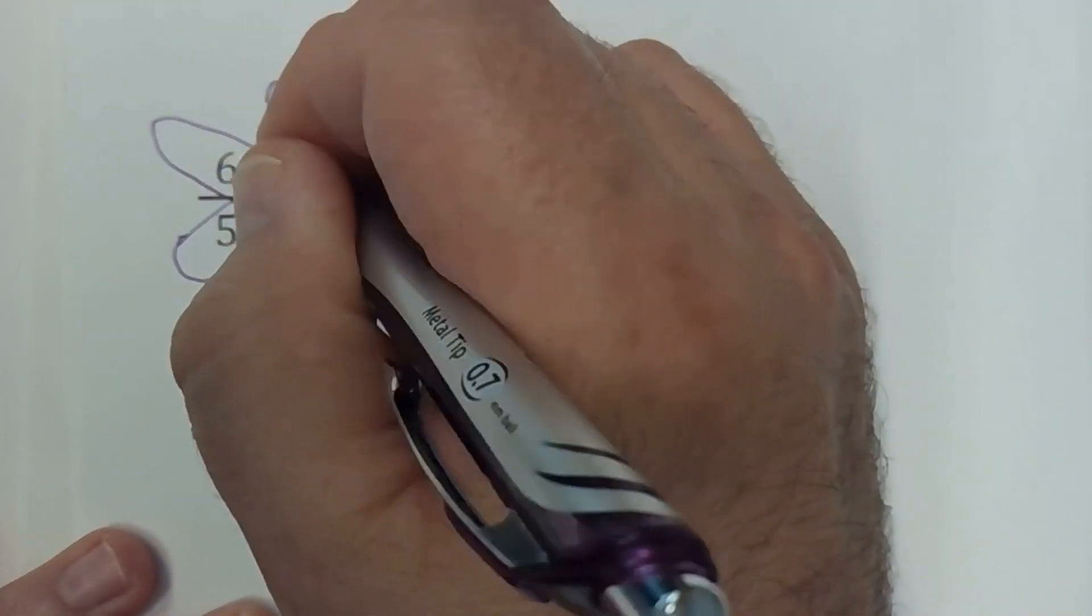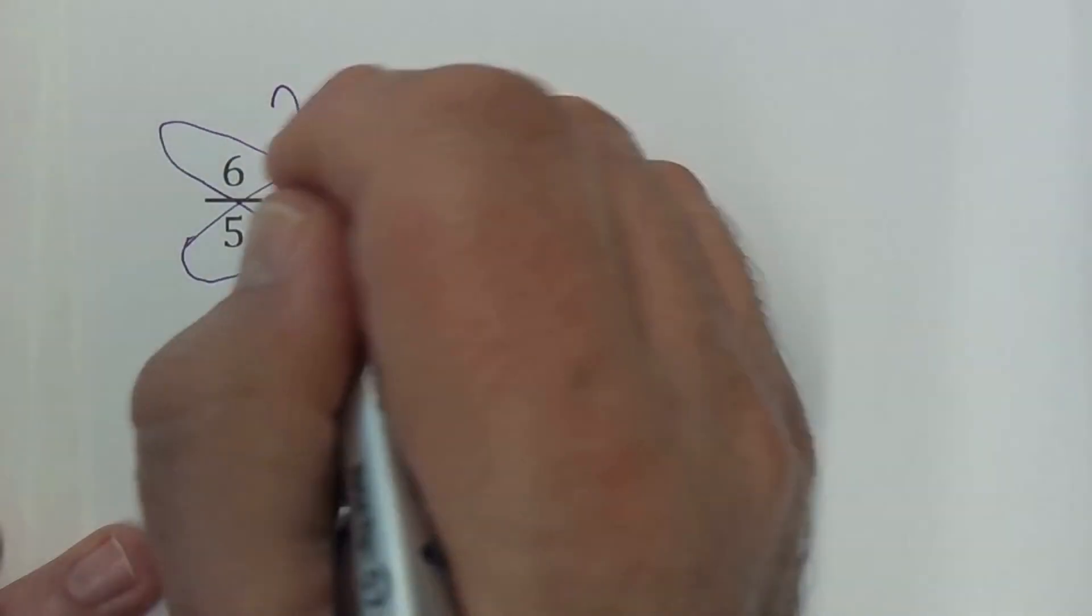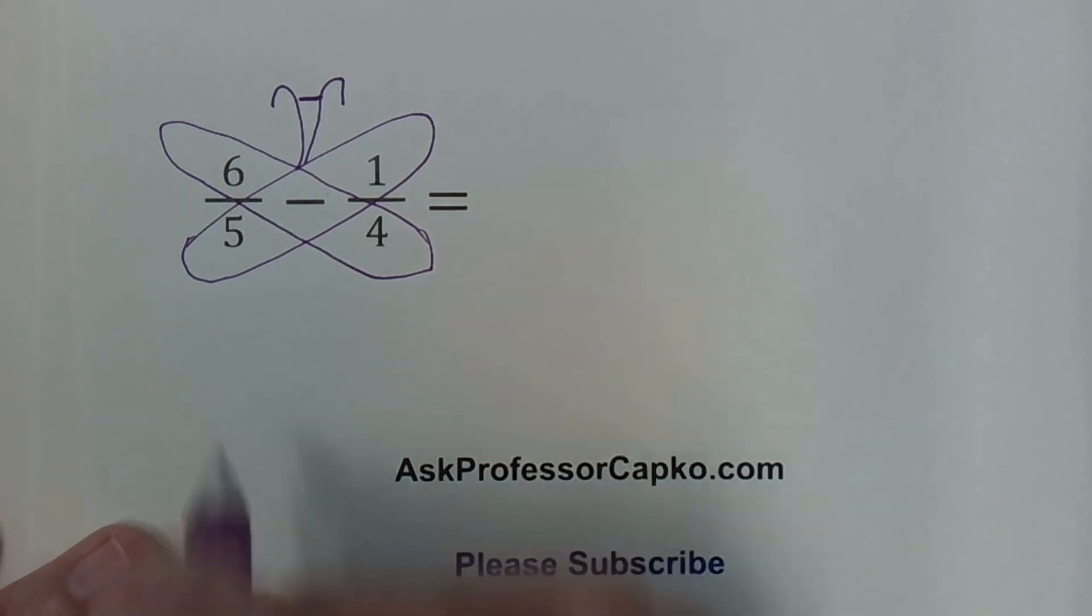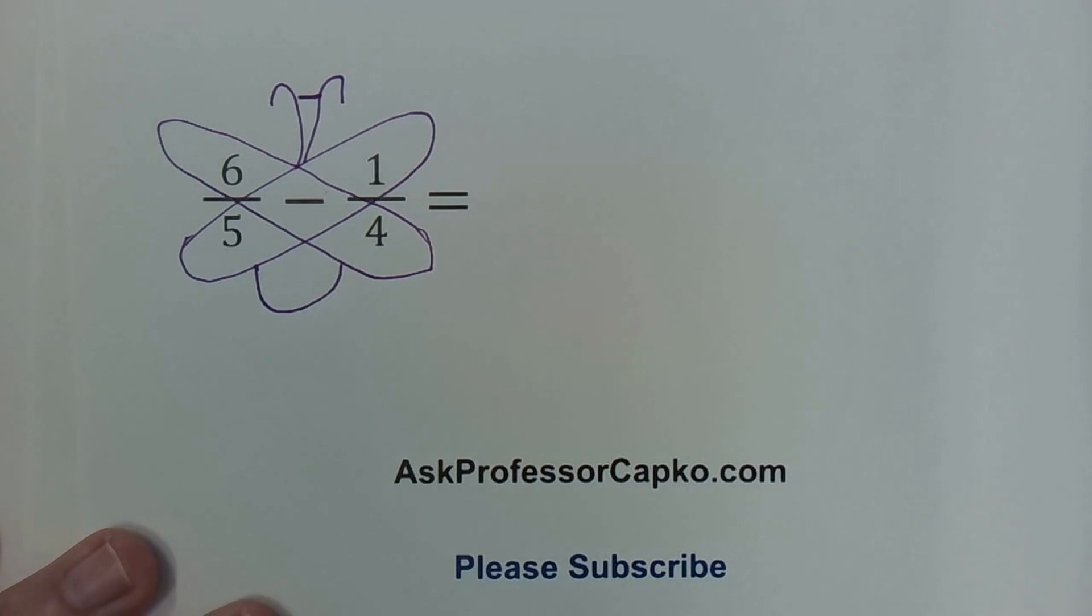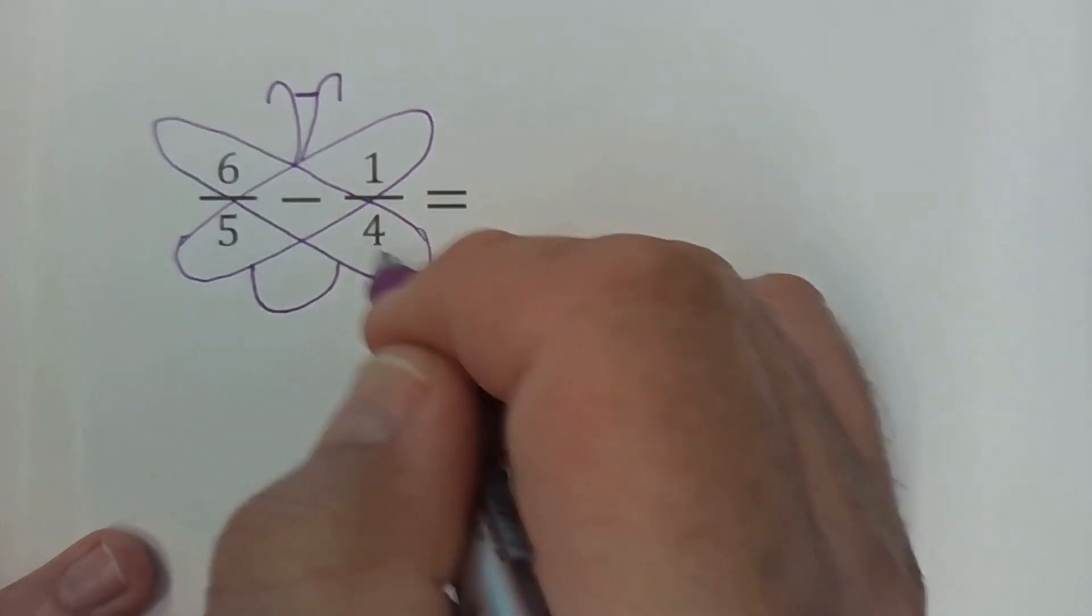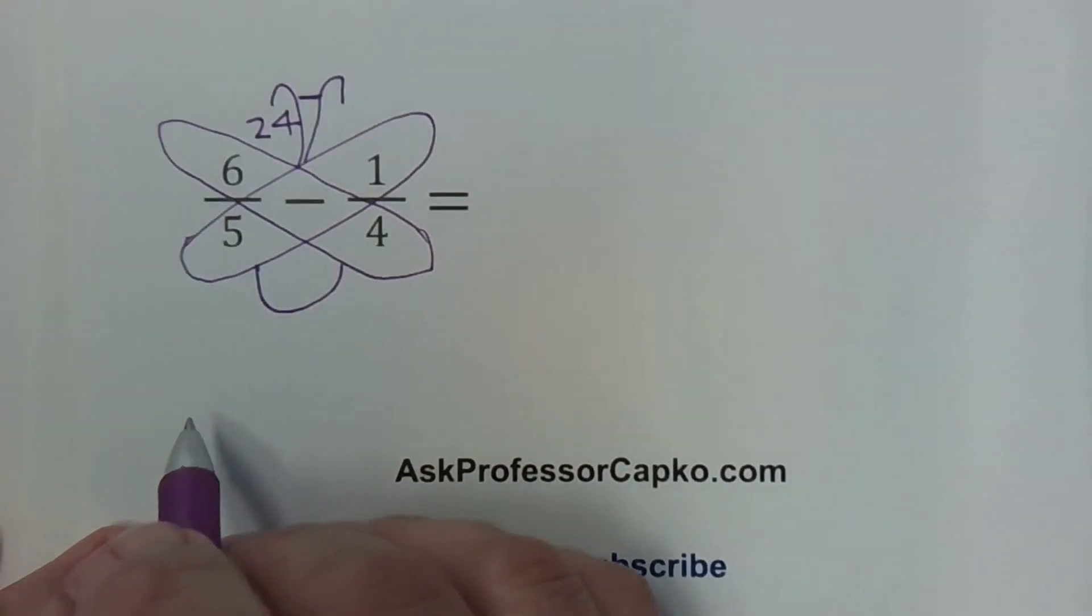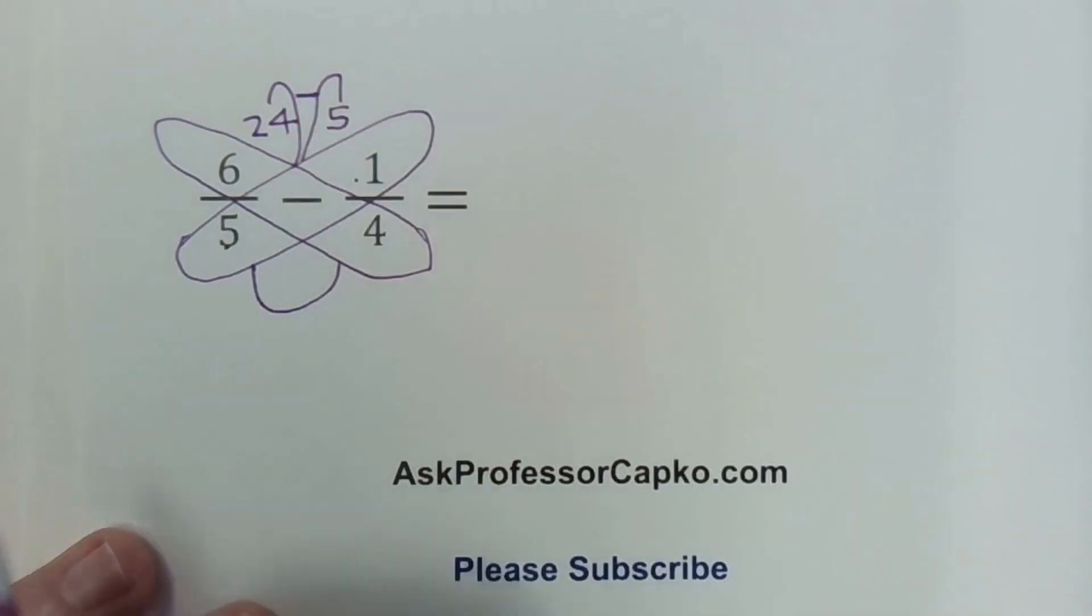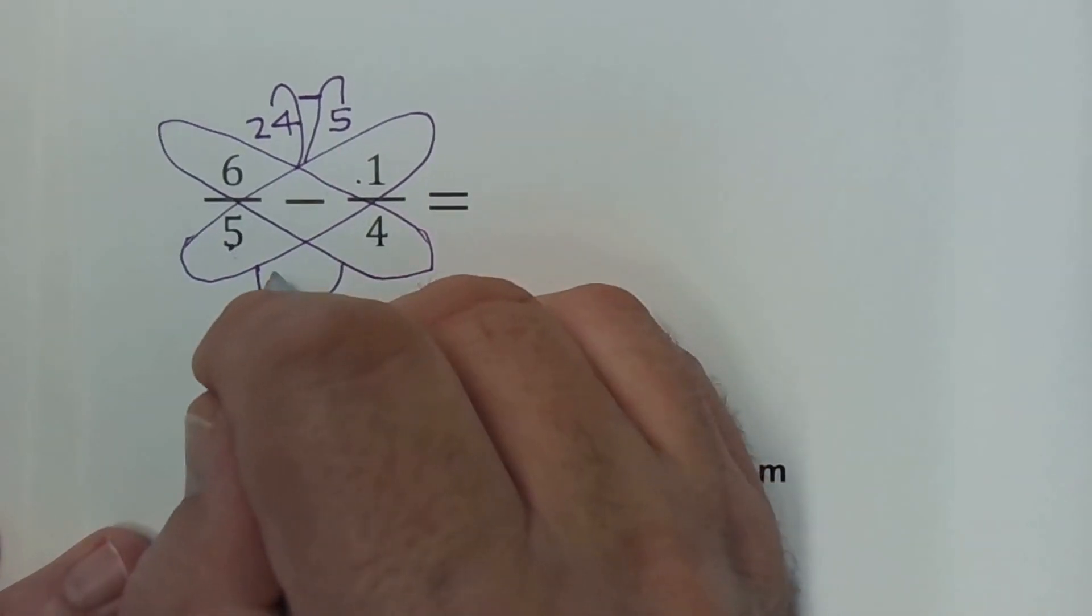Next I'm going to draw the antenna. In between the antennae I put whatever the sign is. In this case it's subtraction, so I put it there so I remember that I'm subtracting. And of course the butterfly needs a body. So far so good. Then I'm going to multiply. 6 times 4 is 24. I put that under this antenna. And then I've got 5 times 1. 5 times 1 is 5. I write that there. And then for the body I'm going to multiply, 5 times 4. 5 times 4 is 20.